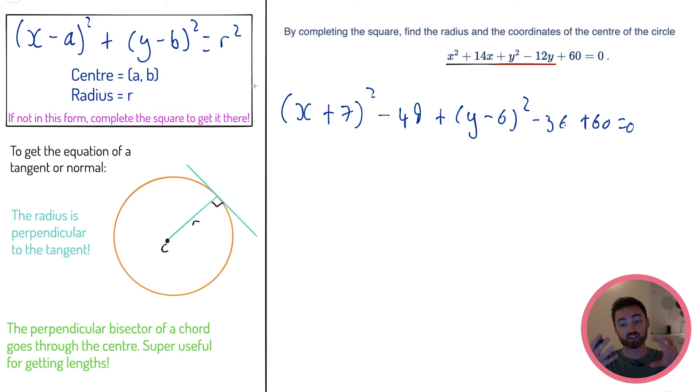We can see we're getting there, we've got these bits, but we need to clean up all the numbers and put them on the other side. So I'm going to have (x + 7)² + (y - 6)² equals 49 + 36 - 60. And then it's just a case of working out what this thing is. Let's do 49 - 60, that's minus 11. So minus 11 + 36 is 25.